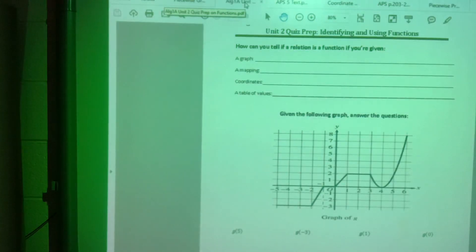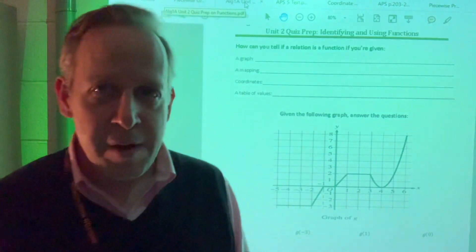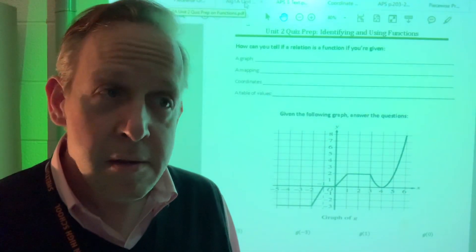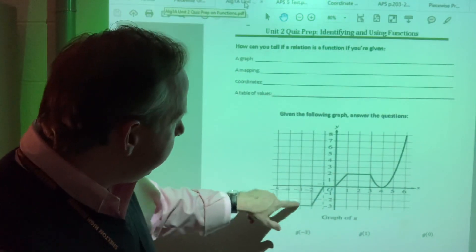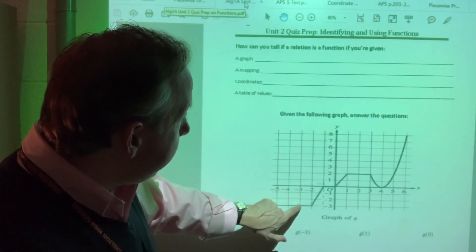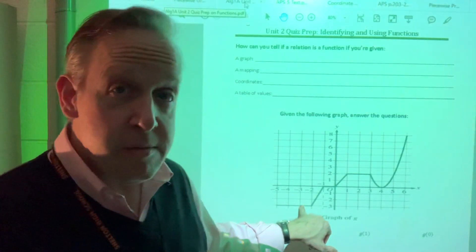The next one. When we have g of negative three, what it means is when x is negative three, what is y? When x is negative three, the y value is down here, which is also at a level of negative three. So the answer is negative three.